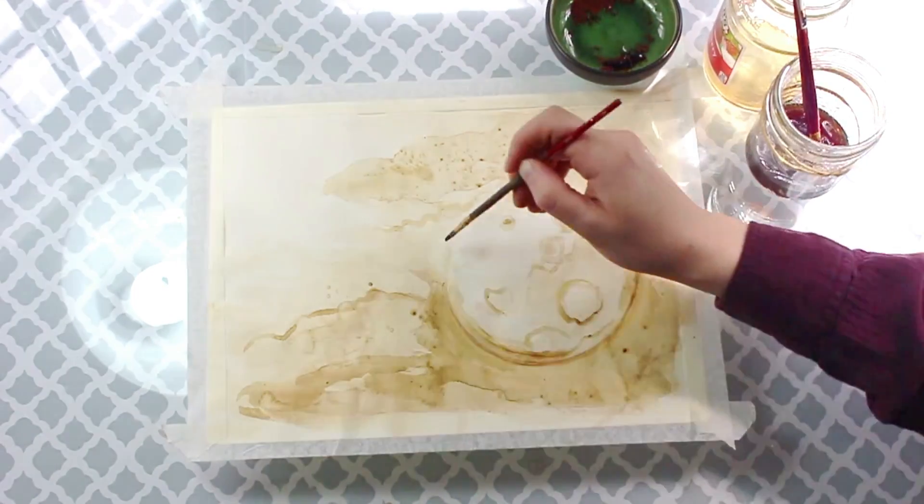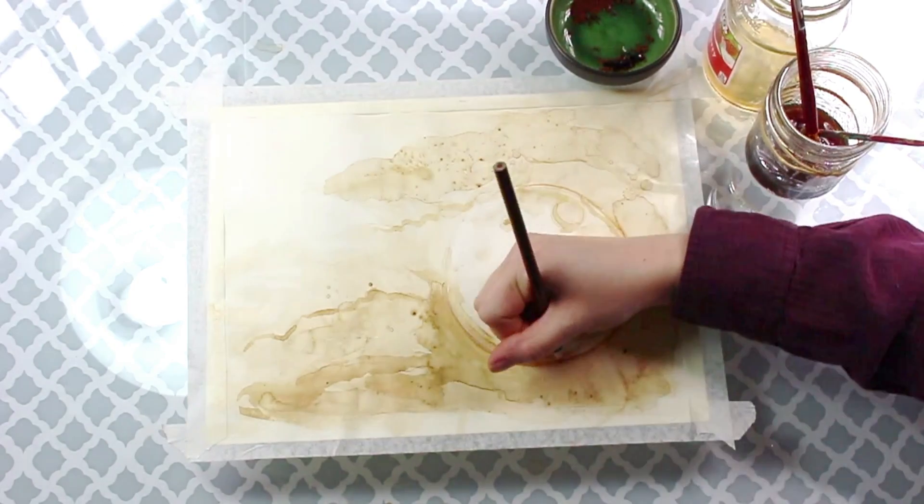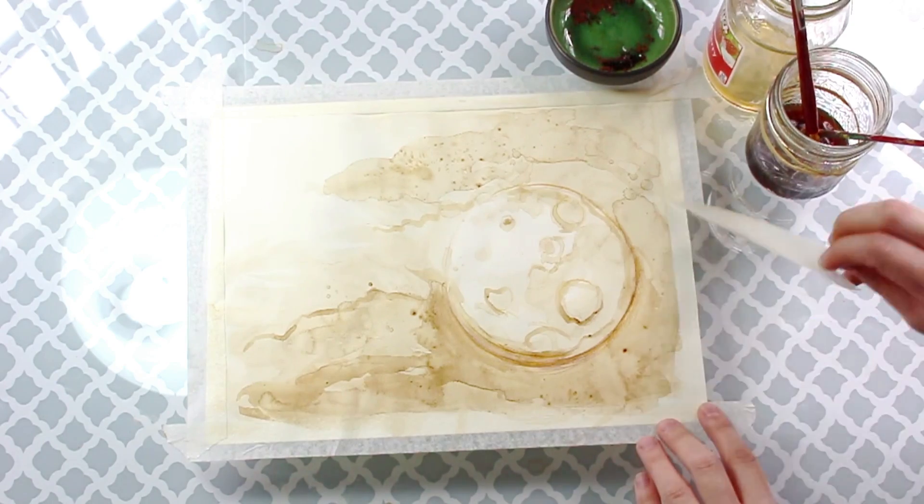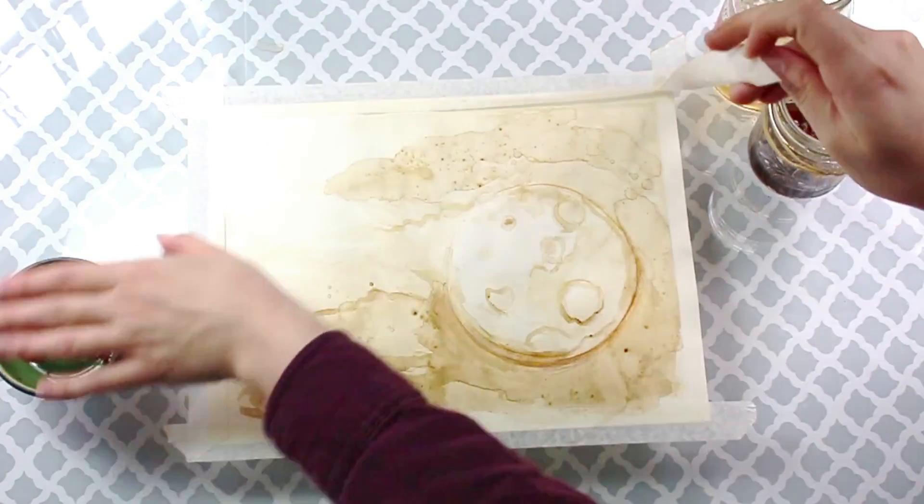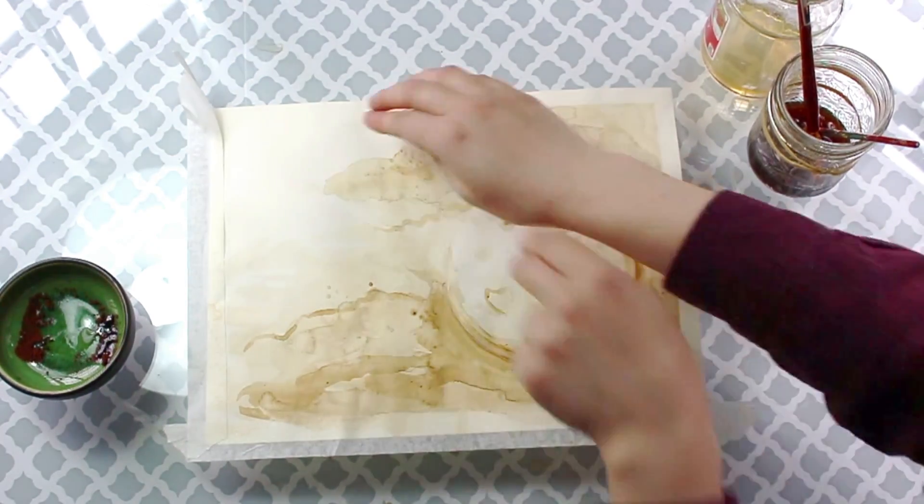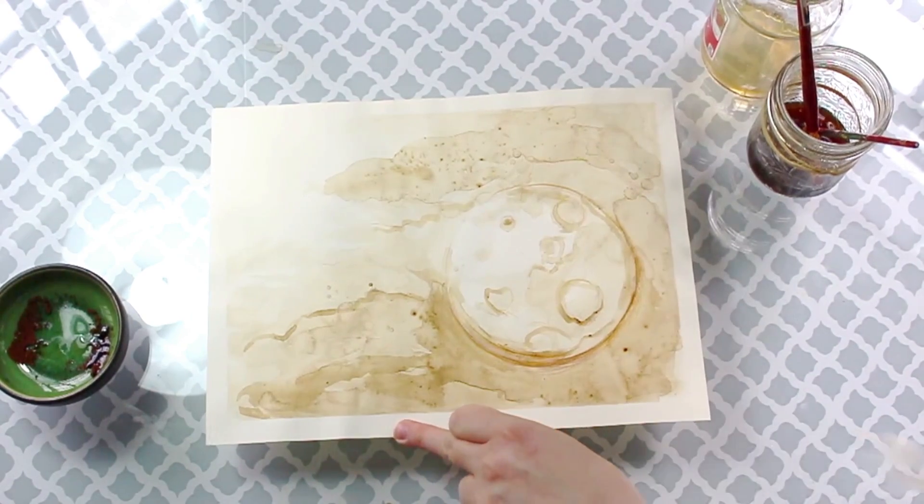If you want to go back in with some white paint you can do that too and add in some highlights, but I kind of like the modeled old look this has in the end. So after it's totally dry you can go ahead and remove your masking tape and hang it up. This is such a fun project to do.